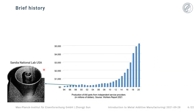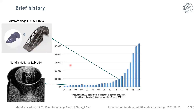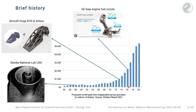One of the first companies to adopt AM for daily production was Airbus. What they are using AM for is weight reduction and topological optimization — reducing the amount of weight for their components while keeping the same structural rigidity. Then in 2016, a very special example came around: the GE engine fuel nozzle, which transports fuel into the combustion chamber.